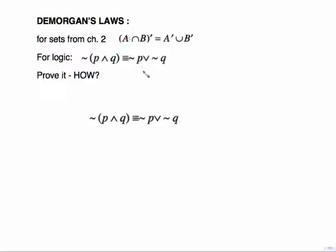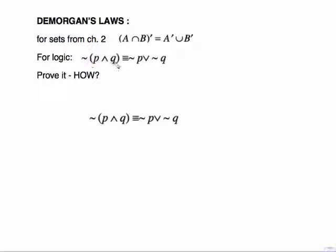DeMorgan's Laws we have seen before in Chapter 2 for set theory — A intersect B complement became A complement union B complement. The same idea applies to logic using P's and Q's with slightly different symbols. So the negation of P and Q becomes not P or not Q. I think of it like the distributive property: distribute the negation through, P becomes not P, change AND to OR, and distribute the negative to Q — not P or not Q.